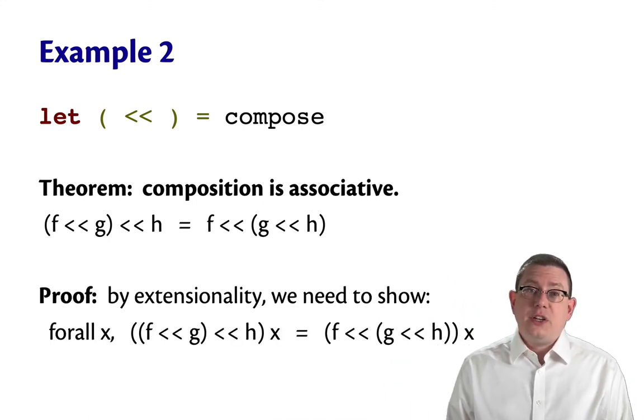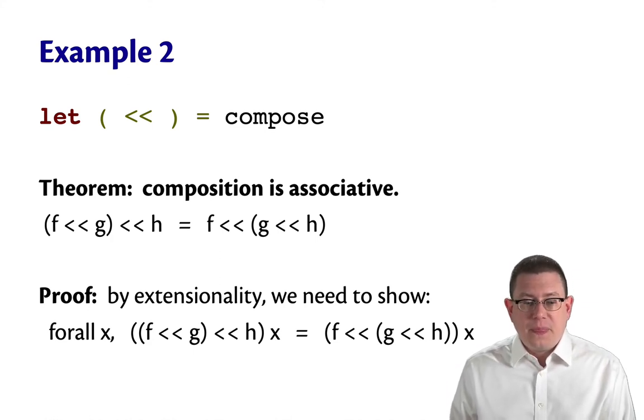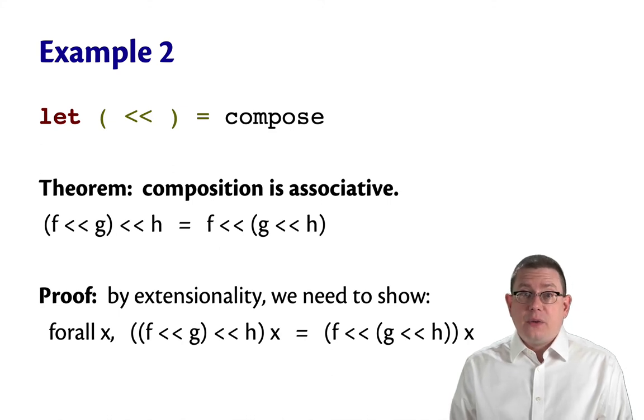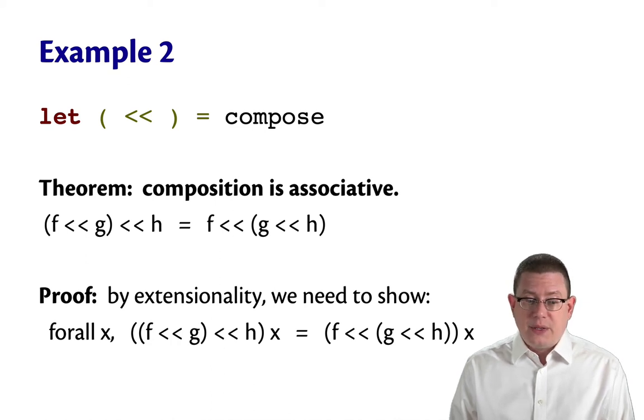To prove that, we're going to need to use extensionality, because we're trying to prove the equality of two functions here. So by extensionality, two functions are equal if they produce the same output when applied to the same input. So we need to show that for all x, the expression on the left here, f compose g compose h applied to x, is equal to the expression on the right, f compose quantity g compose h applied to x.